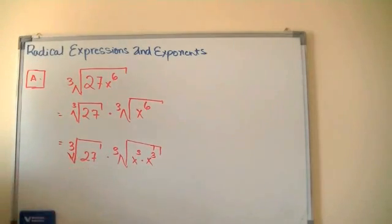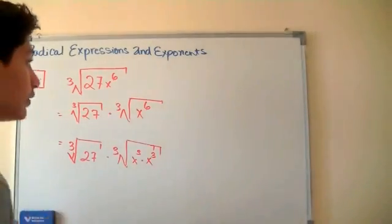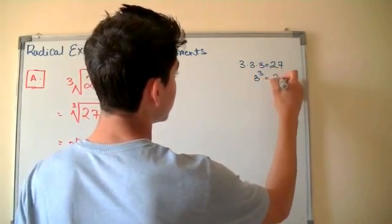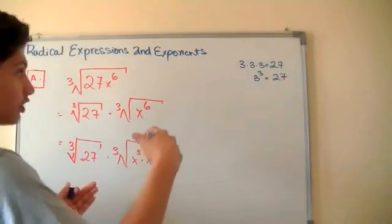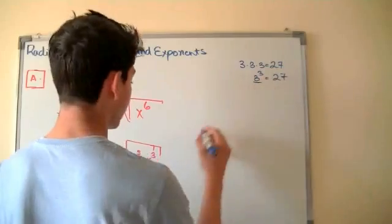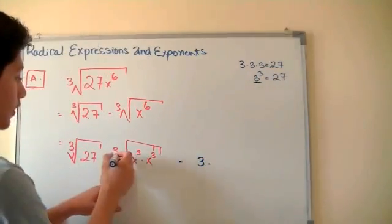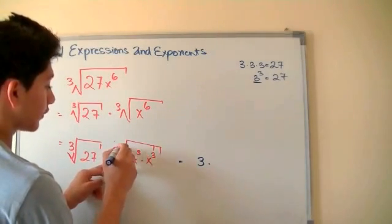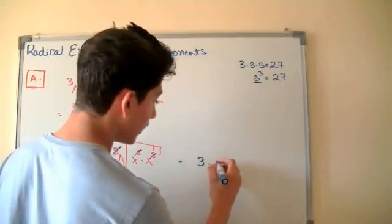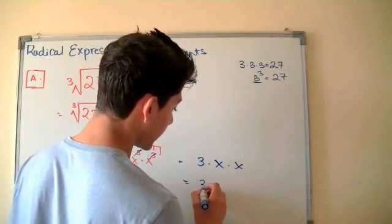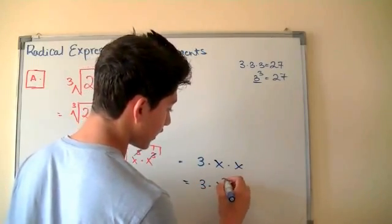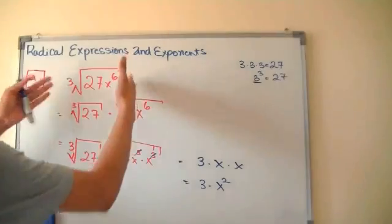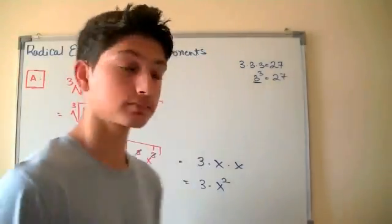The cube root of 27 is equal to 3, because 3 times 3 times 3 gives us 27 — so 3 cubed equals 27. Since we are finding the cube root of 27, it equals 3. The indice is 3 and the exponent cancels out with the index, leaving you x times x. So you can simplify it as 3 times x squared. This is how you solve and simplify this expression without a calculator.